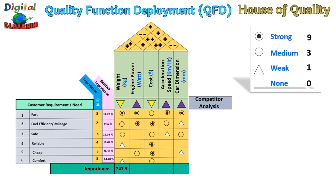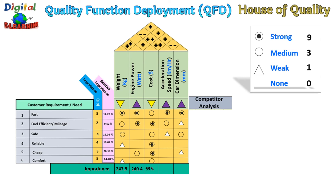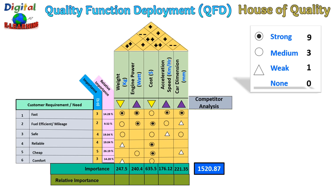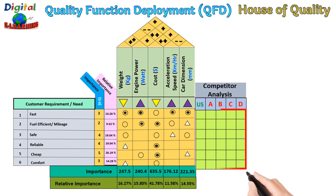To calculate the relative importance of each design parameter, we take each relationship value multiplied by the relative importance of the corresponding customer requirement. For example, for weight: 9 multiplied by 14.28%, plus 3 multiplied by the next relative importance, and so on for each customer requirement. We sum all these values for each design parameter and we get 100% total across all parameters.